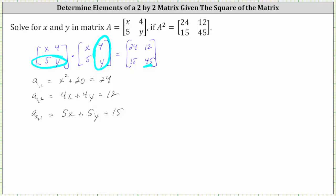And again, the result must be 45. We have five times four, which is 20, plus y times y, which is y squared, and this must equal 45.